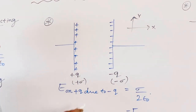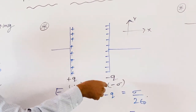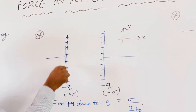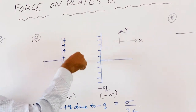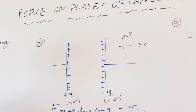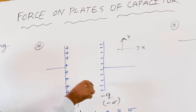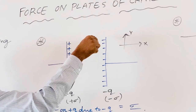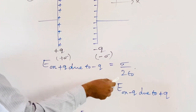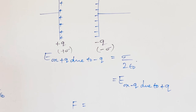The negative charge creates some field, and the positive charge also creates some field. The positive plate lies in the field created by the negative charge, and vice versa. Since we are treating the two plates as conductors, the electric field on plus q due to minus q, or the electric field on minus q due to plus q, both have magnitude sigma by 2 epsilon naught.